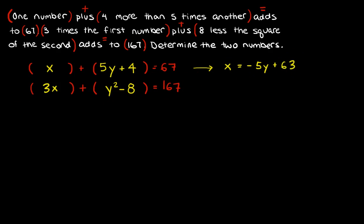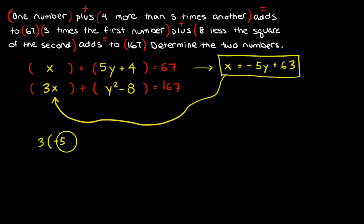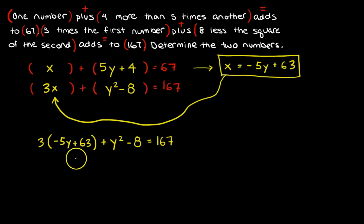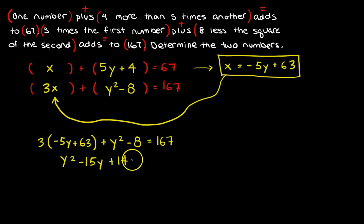I'm going to take this whole expression and substitute it right into that X. All the brackets come down — I have 3 times (−5Y + 63), plus Y squared, minus 8, equals 167. Working through that: Y squared, minus 15Y, plus 3×63 minus 8, then bringing the 167 over as minus 167 — and you get plus 14. So the equation is Y² − 15Y + 14 = 0.